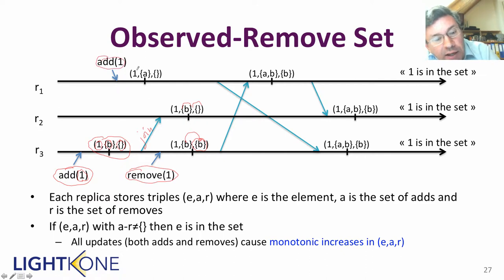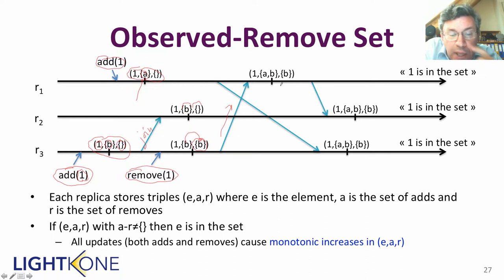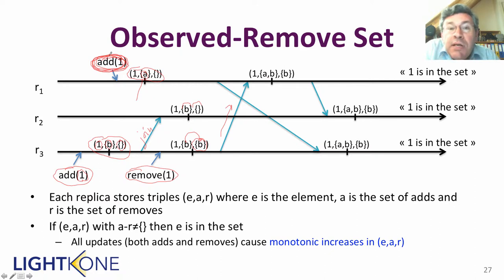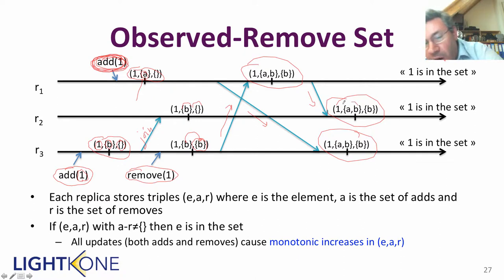Now assume replica one also does an add. Here we have another triple (1, a, empty), where a is another unique value — each add of one will have a different unique value. Now the joins happen. The triple (1, b, b) is joined with (1, a, empty), giving (1, a∪b, b). So on one path we have added one and removed one, and on the other path we have just added one. That means the one is actually still there, because the first replica's add has not been removed. Removes work for particular adds — in order to remove an add, that add has to be in the causal history of the remove. After a few more joins, all three replicas will have the same value (1, a∪b, b), and this corresponds to one being in the set, because the adds are strictly bigger than the removes.